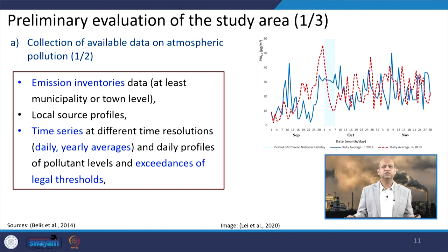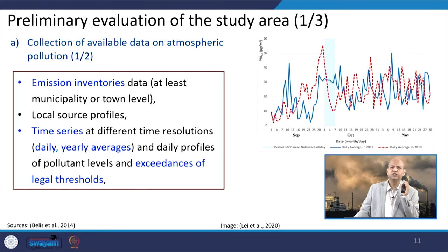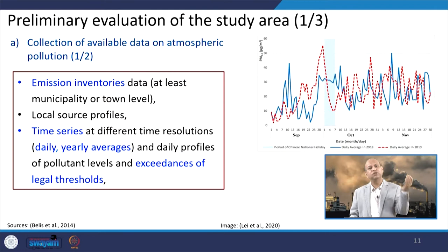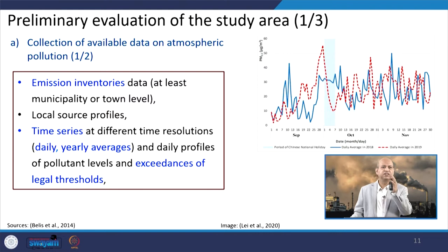In the preliminary evaluation of the study area, important aspects include emission inventories at municipality or town level, which give insight into which sources dominate. However, dominating sources in an inventory may differ from what appears at the receptor, since contributions change with location. Emission inventory-based source apportionment may therefore differ from receptor modeling-based results.